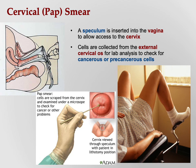Just as males have the digital rectal exam, females have the Pap smear as their corresponding screening procedure. A speculum is inserted into the vagina to allow access to the cervix. Cells are collected from the external cervical os by swab to check for cancerous or pre-cancerous cells — essentially screening for cervical cancer, analogous to how the rectal exam screens for prostate cancer.